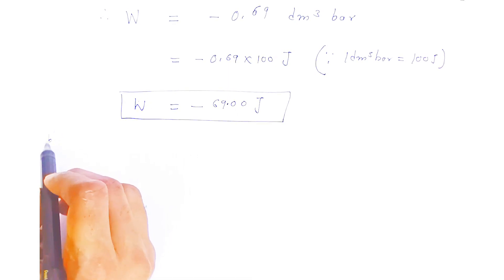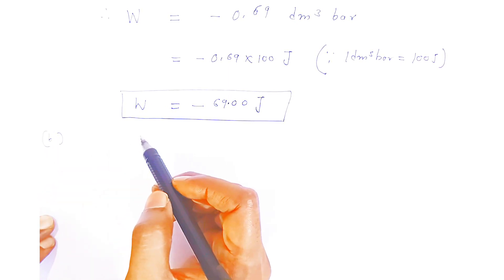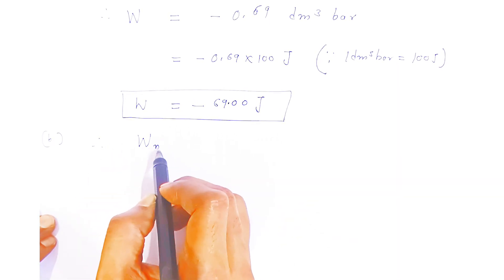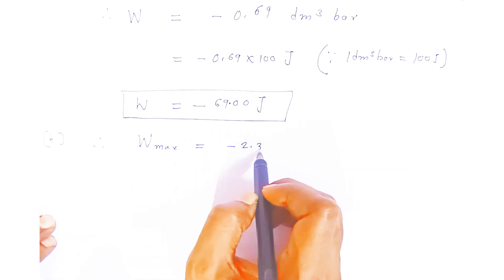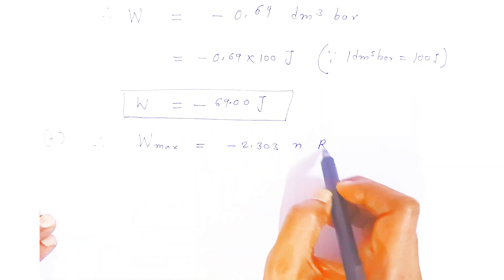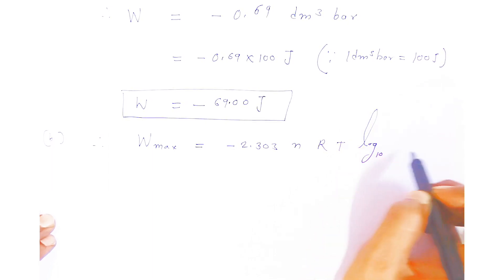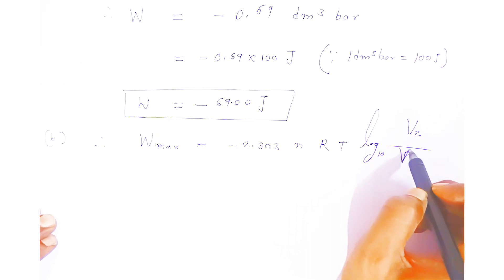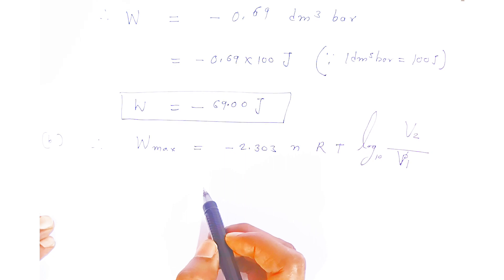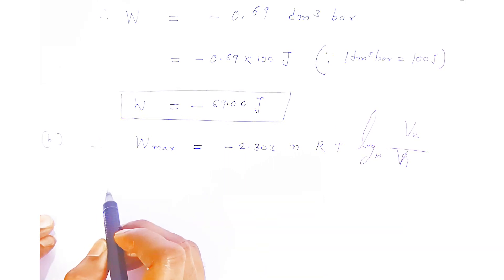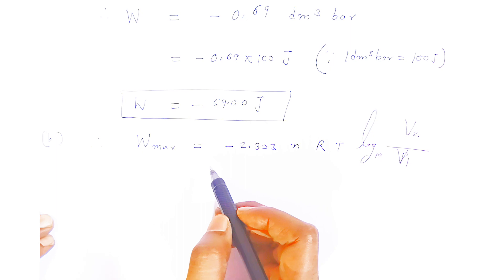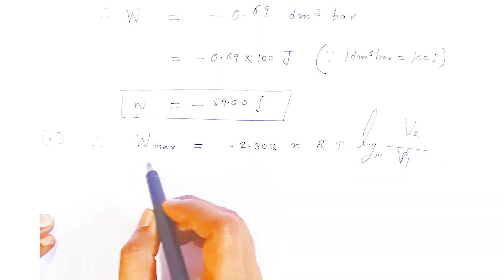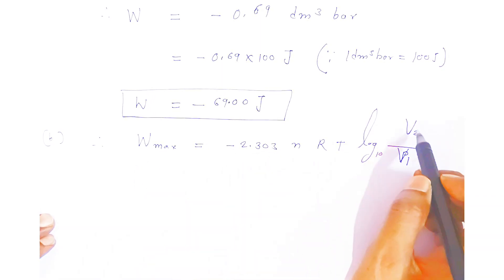Now in the second question, the expansion is isothermal and reversible. For this we use the maximum work done formula: w_max = -2.303 × n × R × T × log₁₀(V2/V1). Since it is isothermal and reversible, we use this maximum work done formula.